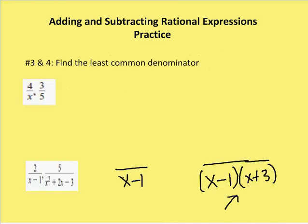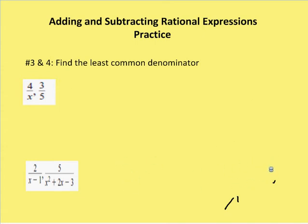All right, let's take a look at two other problems. I want to find the least common denominator for 4 over x and 3 over 5. I can see that right now I have no factors of x that are common to 5. So my least common denominator for the first problem is going to be 5x.